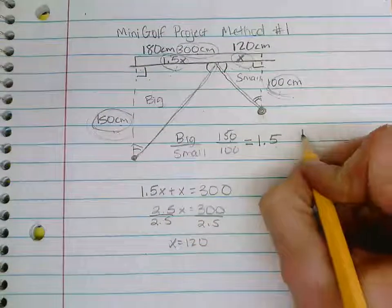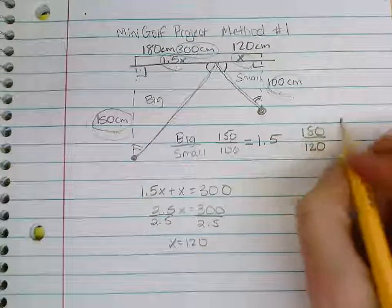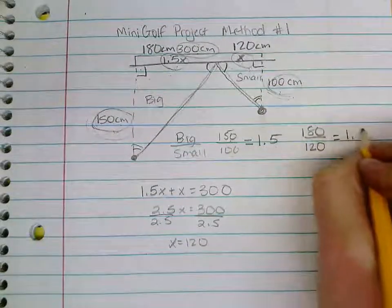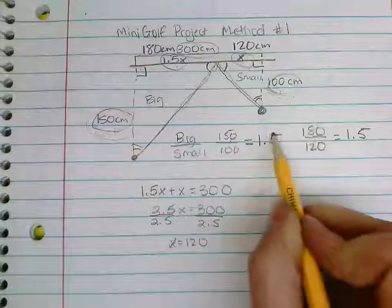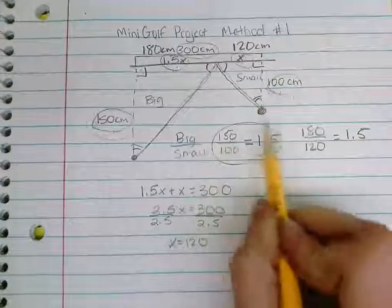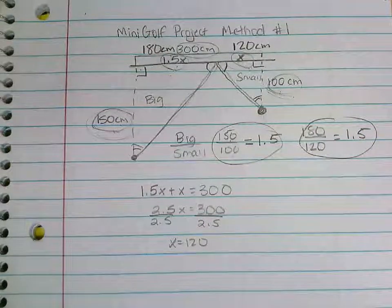So I should be able to take the big triangle and divide it by the small triangle. So I take 180 and I divide it by 120, I should receive the same value of 1.5. And when we do check that in a calculator, that is true. We get the same ratio, so this ratio is the same as this ratio here, meaning that the two triangles are proportional.